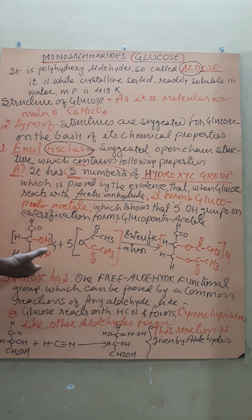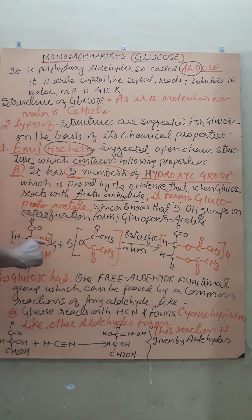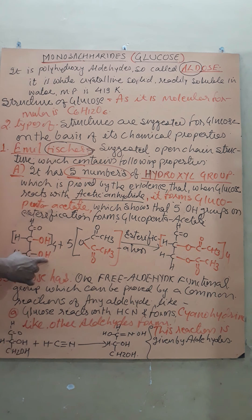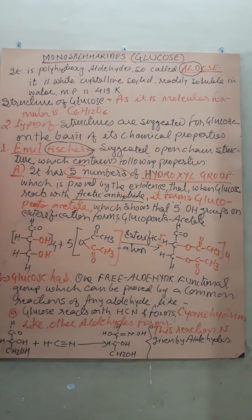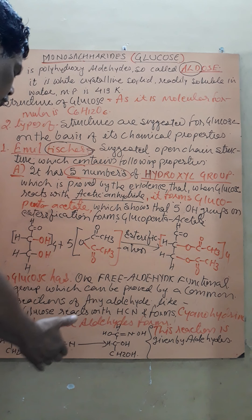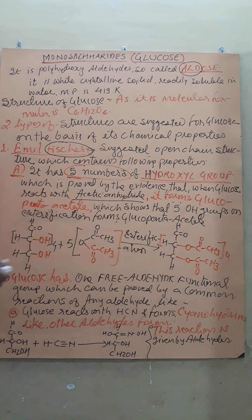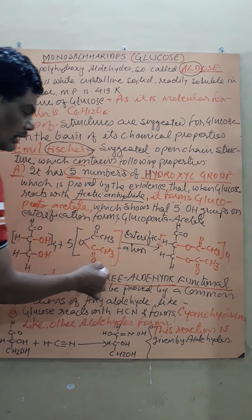Fisher proved this by reacting glucose with five molecules of acetic anhydride. The acetic anhydride undergoes esterification with all five OH groups, forming a pentaacetate. The formation of pentaacetate confirms that glucose has five hydroxyl groups.